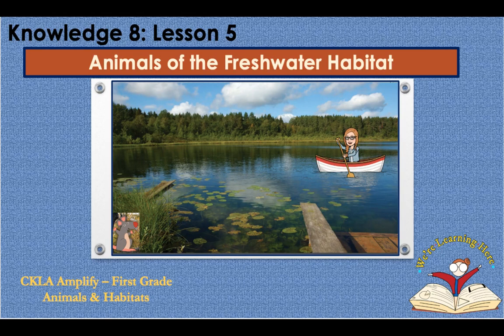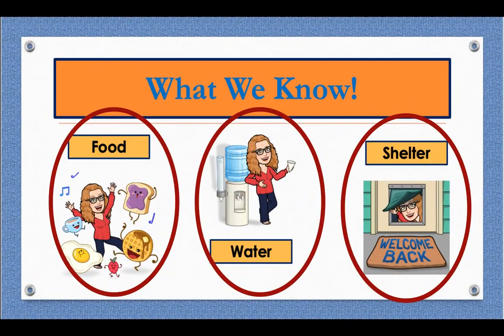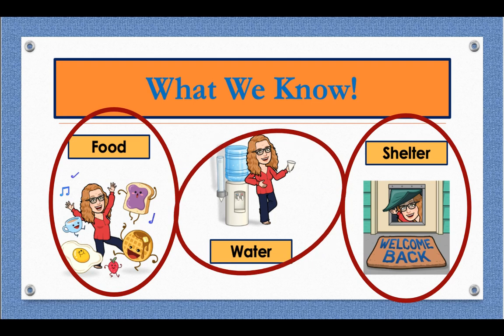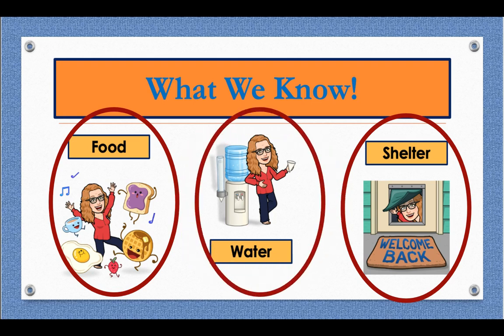Welcome back to Knowledge 8, Lesson 5. Let's learn about animals of the freshwater habitat. What we need to know: let's remember that all animals need food, water, and shelter to survive, just like us humans.